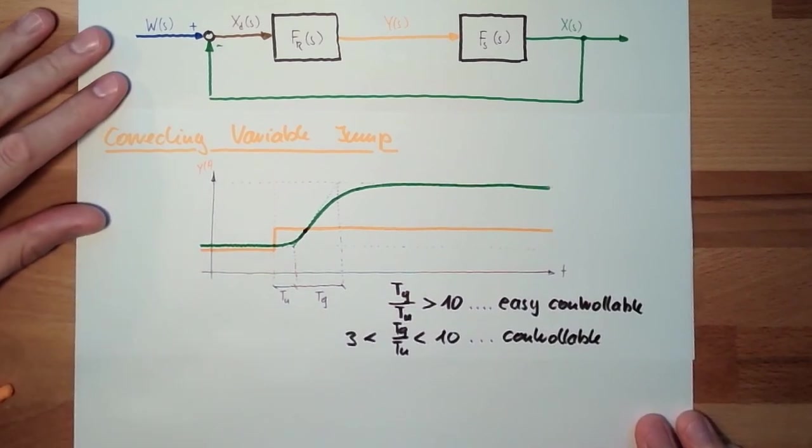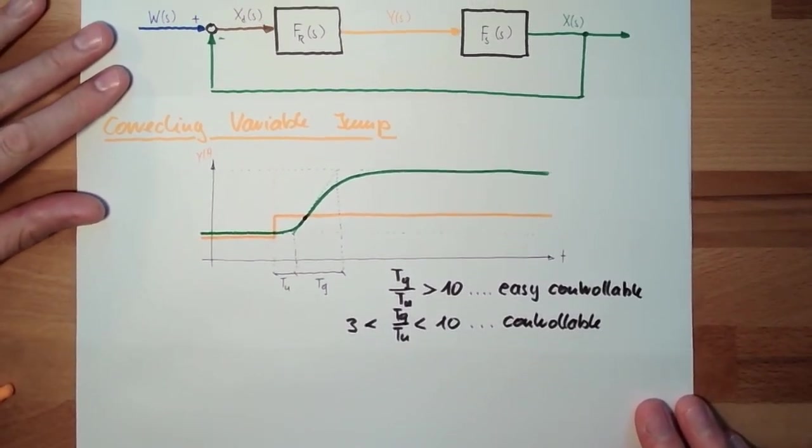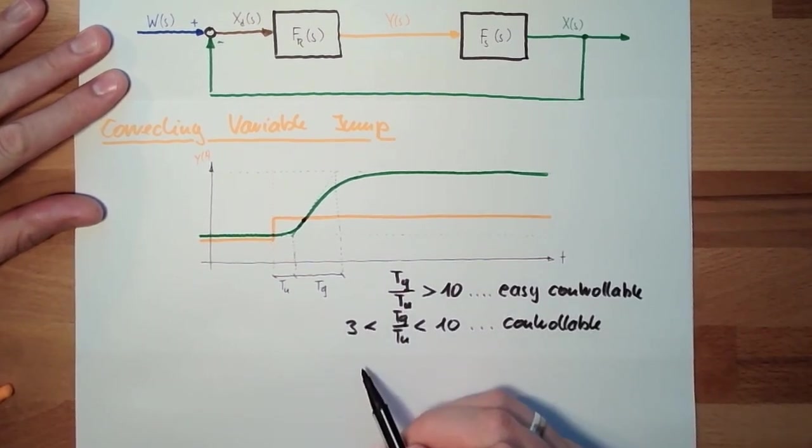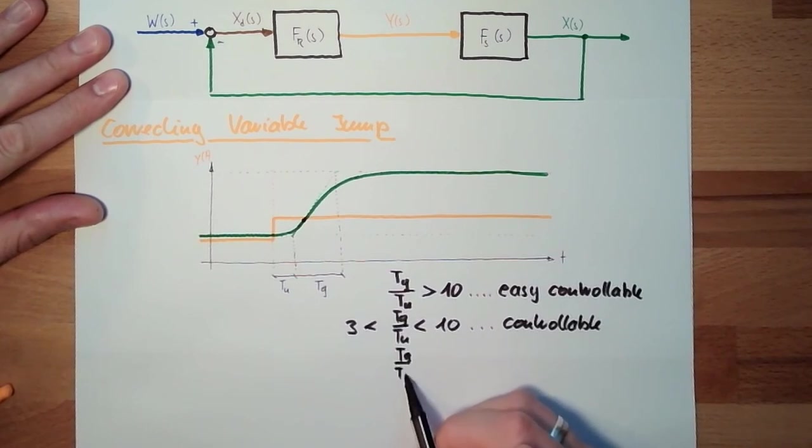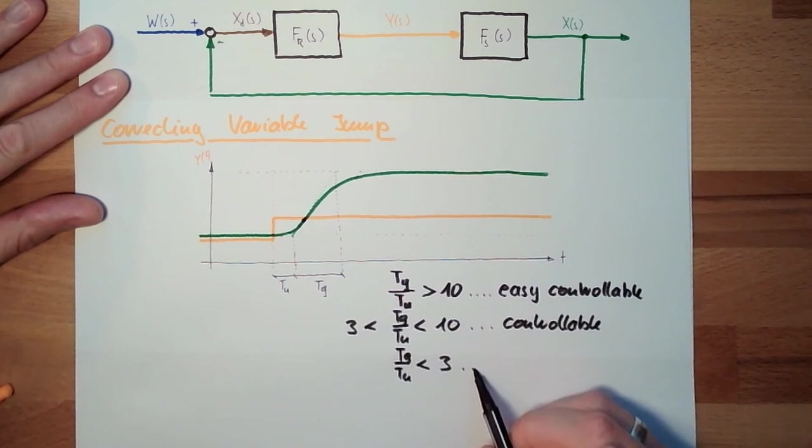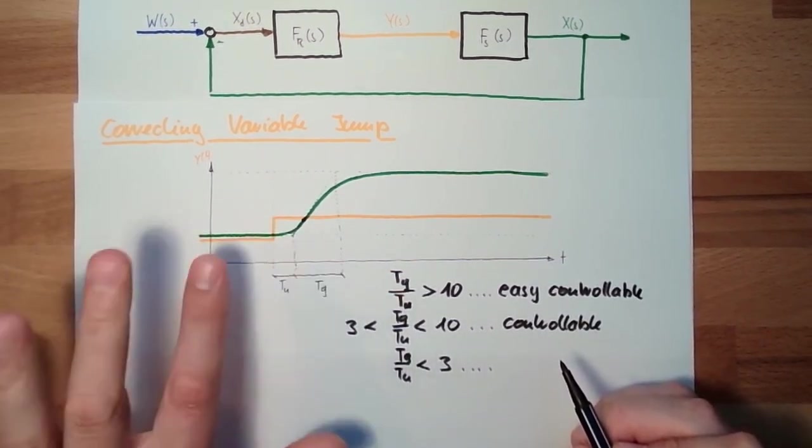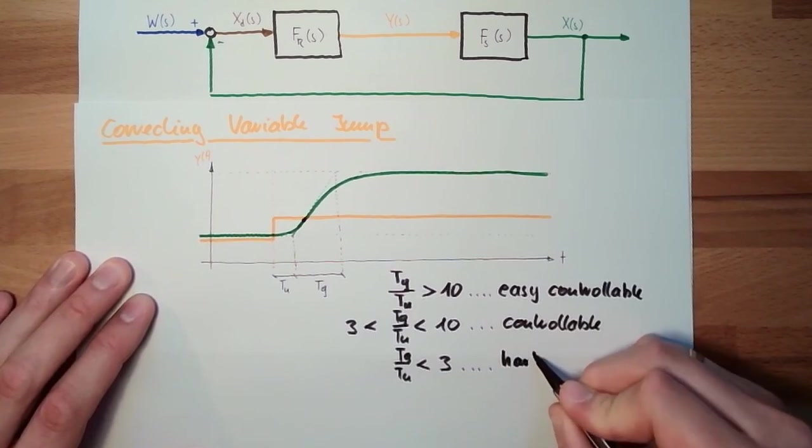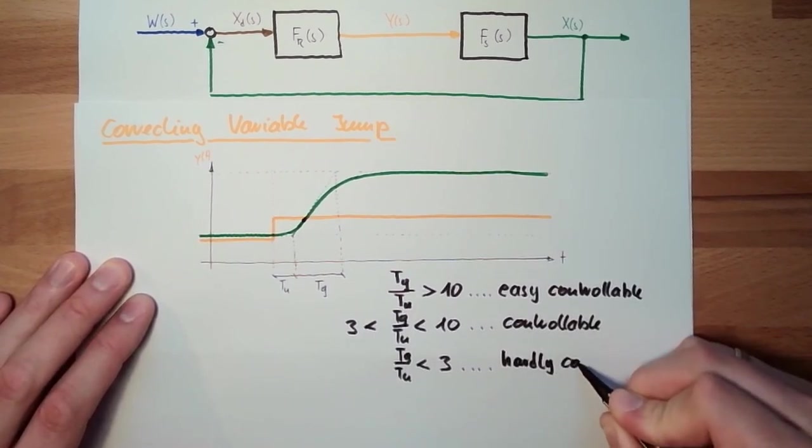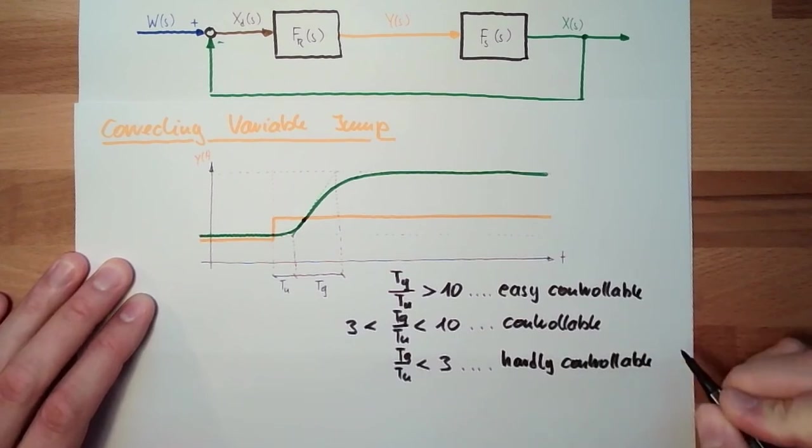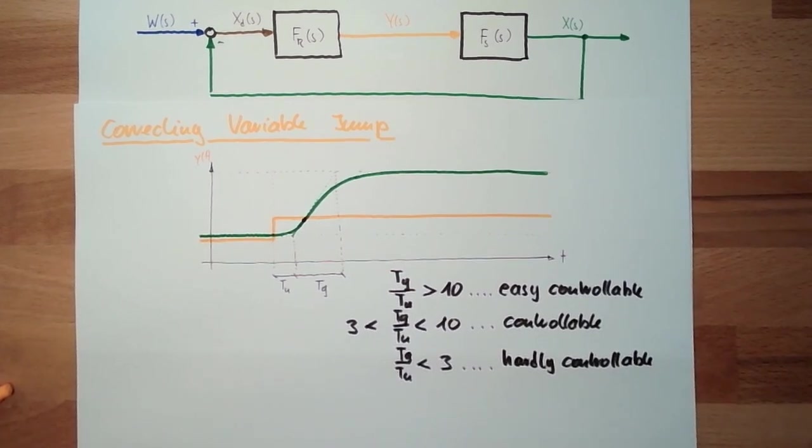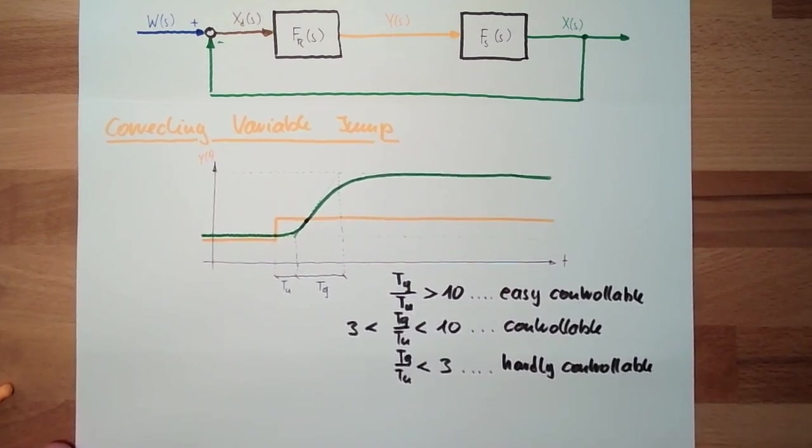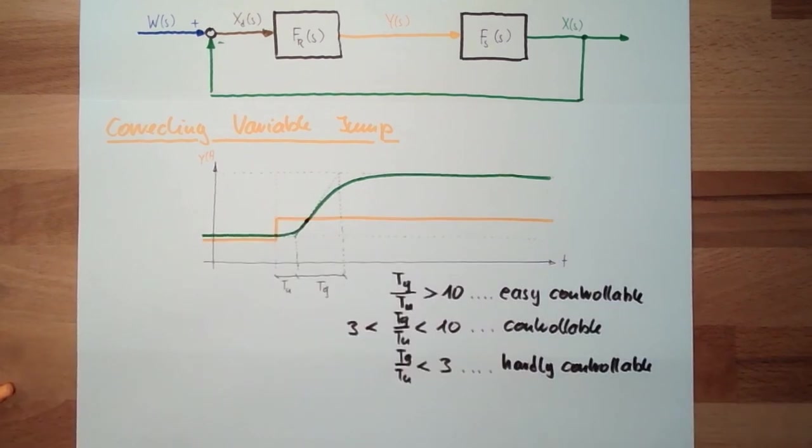And if we're somewhere in the area below 3, so if Tg to Tu is less than 3, this means it's only 3 times here, we're at the limit. This is hardly controllable. Notice something? There is not written 'not controllable' - hardly controllable. It's not easy to control, it's really the opposite of easy. However, if we spend a lot of time, then it might even be possible.